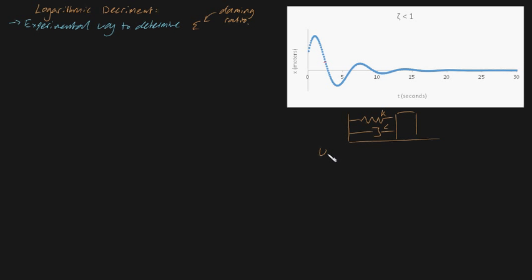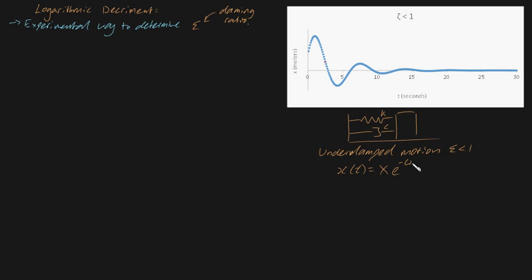And as it turns out from mathematics, underdamped motion — i.e. when zeta is less than 1 — means our equation of motion is given by x, the distance from equilibrium at some time t, equal to x, our initial amplitude, times e to the minus omega_n zeta t, times sine of omega_d t plus phi. I've shown this in a previous video. This is our general equation of motion.